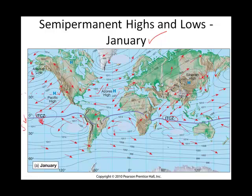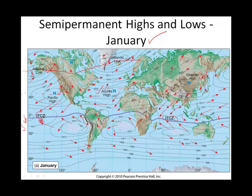In the southern hemisphere, we have semi-permanent highs as well. The lows would be at the Aleutian low and the Iceland low — these are where the Ferrel and the polar cell meet, because of ascending air at the polar front. In the southern hemisphere, we have additional semi-permanent highs, though without specific names listed here.